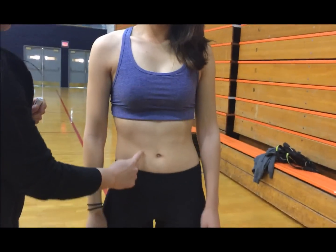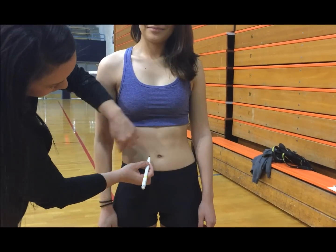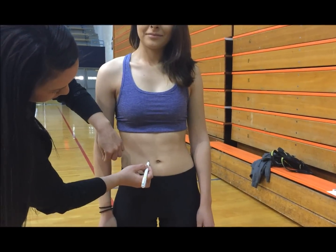Next is the abdominal area, which is two centimeters to the right of the umbilicus, your belly button. This will be a vertical fold.